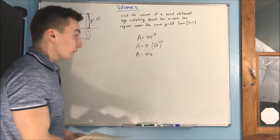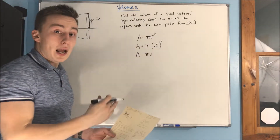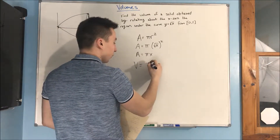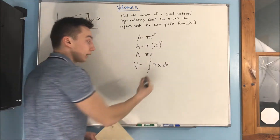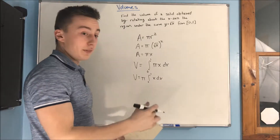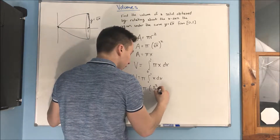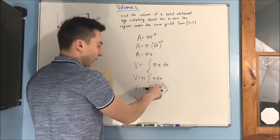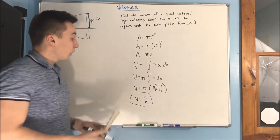Now what do we do with that area? To find the volume, we're going to need to integrate over this whole interval, because we're adding up an infinite number of cross-sections. So our volume is going to equal the integral from 0 to 1 of pi x dx. We can take pi out, giving us pi times the integral from 0 to 1 of x dx. We integrate to get pi times x squared over 2, evaluated from 0 to 1, which gives us a volume equal to pi over 2.